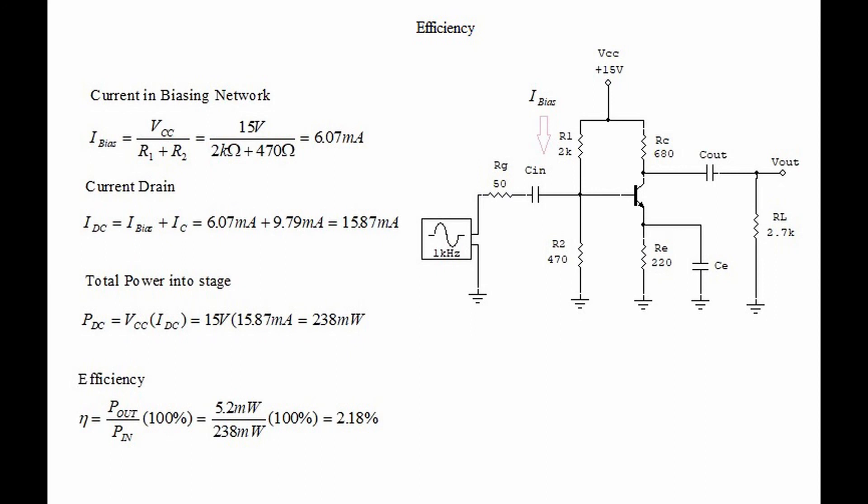We now calculate the efficiency of the stage. Efficiency is indicated by the Greek letter eta and it's equal to pout divided by pin times 100 percent. So it's 5.2 milliwatts divided by 238 milliwatts, which equals 2.18 percent.